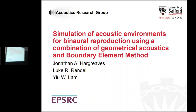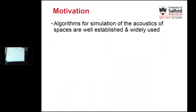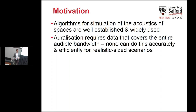I'm using a combination of geometrical acoustics and boundary element methods. Algorithms for the simulation of acoustics of spaces are well established and widely used. However, auralization importantly requires data that covers the entire audible bandwidth, and the algorithms we have cannot accurately and efficiently do that for realistic size scenarios. This is because the audible bandwidth covers many octaves during which wavelength goes from being large with respect to obstacles to being quite small with respect to obstacles.